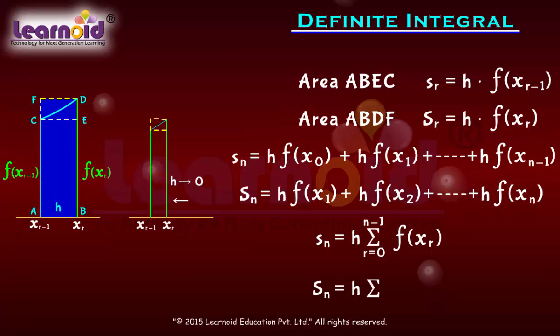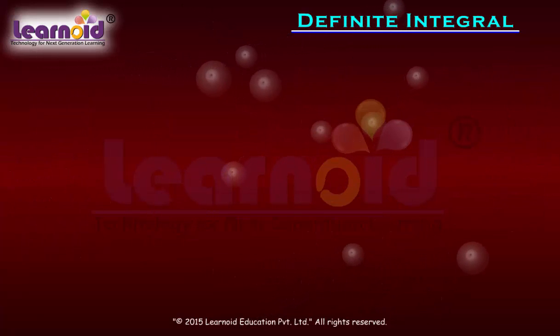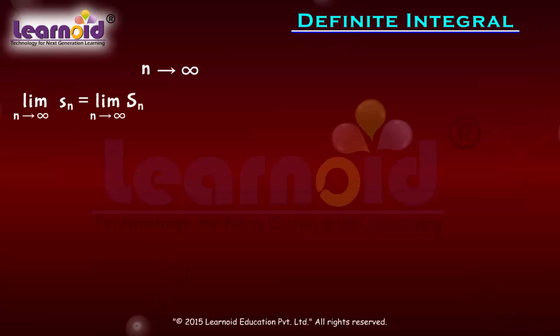As n tends to infinity, strips become narrower and the limiting value of sₙ and Sₙ are the same and equal to the limiting value which is the required area under curve, represented by definite integral of f(x) dx from a to b.